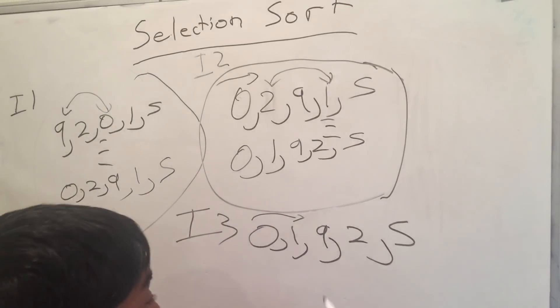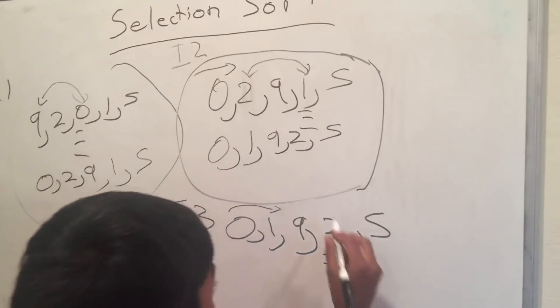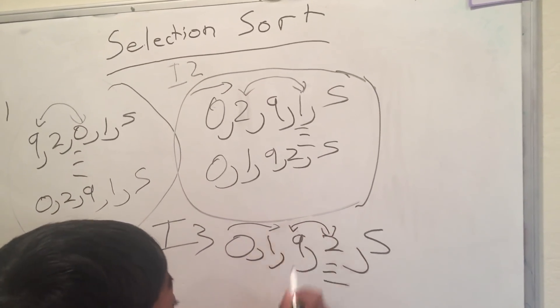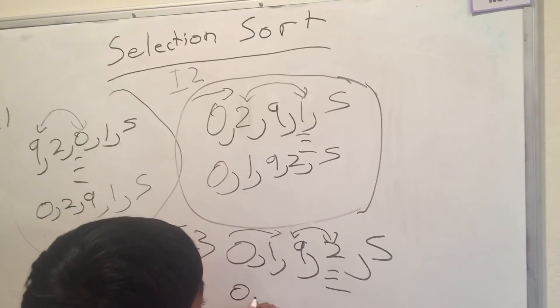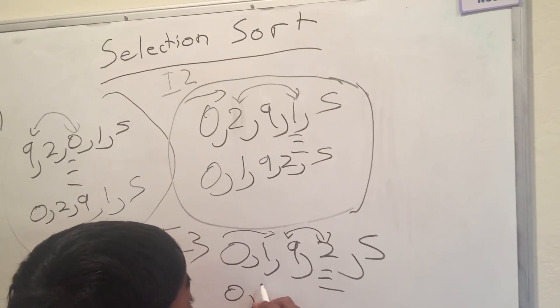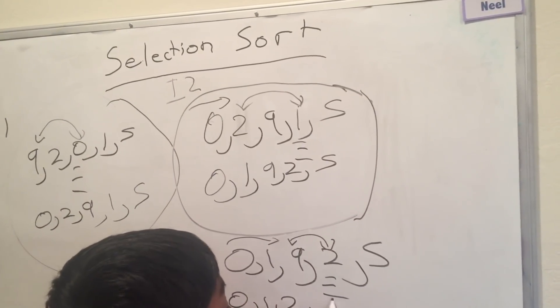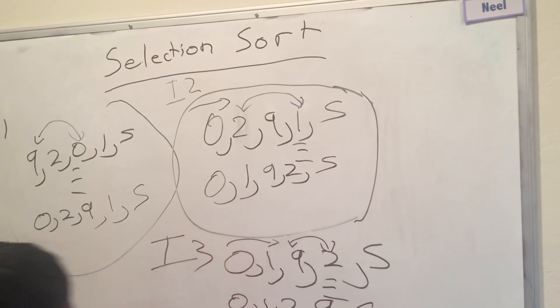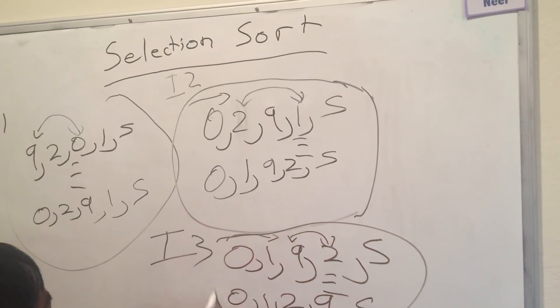And you don't have to increase the complexity by doing anything here. So, now, you pick the least, which is this one. And you switch it with this dude. So, now, it becomes 0, 1, 2, 9, and 5. That is the third iteration.